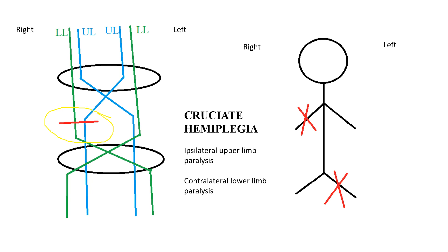For example, the left-sided upper limb fiber and the right-sided lower limb fiber are affected, which manifests as cruciate hemiplegia. If the left-sided upper limb fiber is affected, then the ipsilateral upper limb — meaning the right upper limb — is affected, because after crossing, the left-sided fiber comes to the right side.